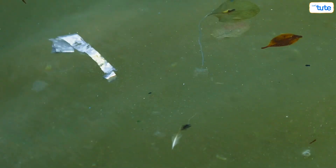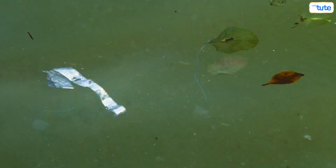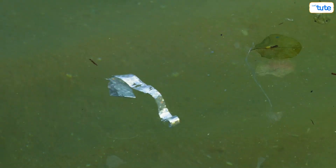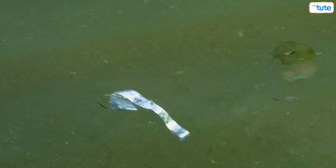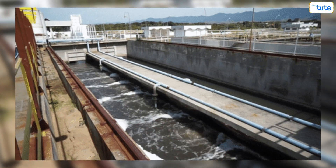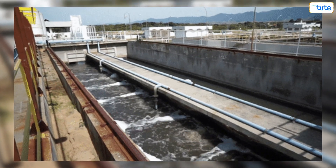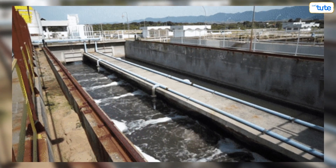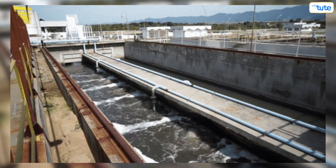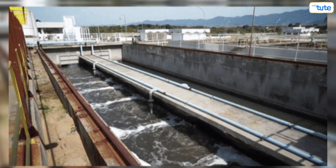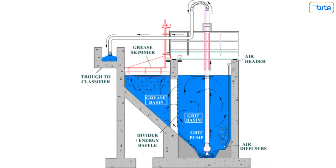But smaller and fine grit can easily make their way through the bars and can damage the pumps and other equipment. Too small to be screened out, this grit needs to be removed from the grit chamber. So the second step of wastewater treatment is grit removal.